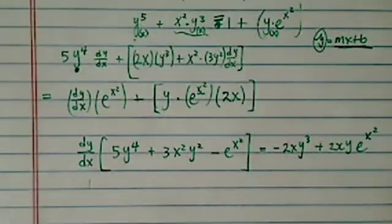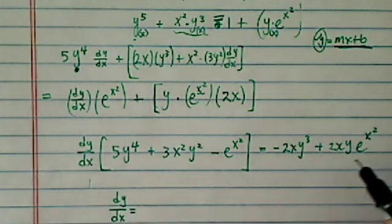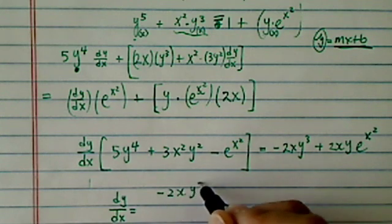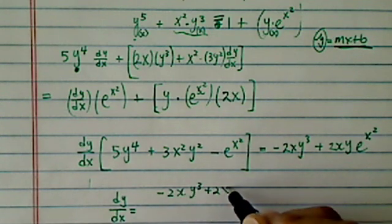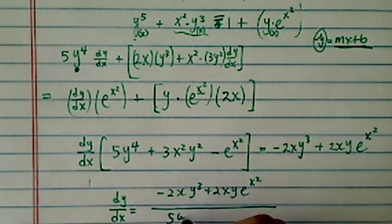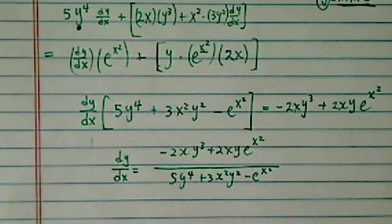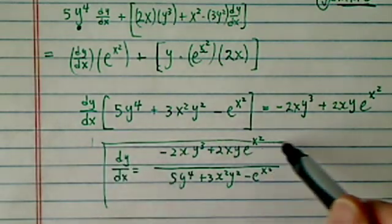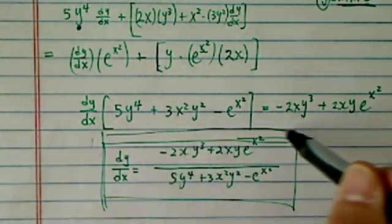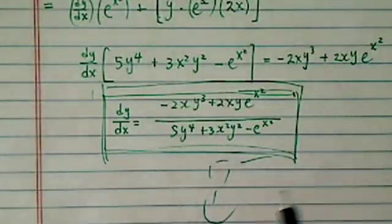It's a pretty messy one here. One more step: dy/dx is equal to the numerator, which is minus 2xy to the third plus 2xy e to the x squared, divided by the whole denominator: 5y to the fourth plus 3xy squared minus e to the x squared. So here is your dy/dx — this is how you find the derivative by implicit differentiation. Hope this helps. Have a confident day.